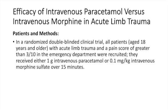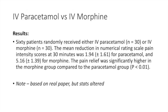We're looking at the efficacy of intravenous paracetamol versus IV morphine in acute limb trauma. This is a randomised double-blind clinical trial. All patients were aged 18 years and older with acute limb trauma and a pain score greater than 3 out of 10 in the ED. They received either one gram of paracetamol IV or IV morphine over 15 minutes. Results: 60 patients randomly received either paracetamol or morphine. The mean reduction in numerical rating scale pain intensity scores at 30 minutes was 1.94 for paracetamol and 5.16 for morphine.